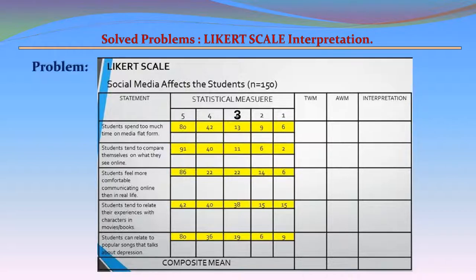Statement 3 statistical measures from scale 5 to 1 are: 86, 22, 22, 14, and 6. Statement 4: Students tend to relate their experiences with characters in movies and books. The statistical measures from scale 5 to 1 are: 42, 40, 38, 15, and 15.